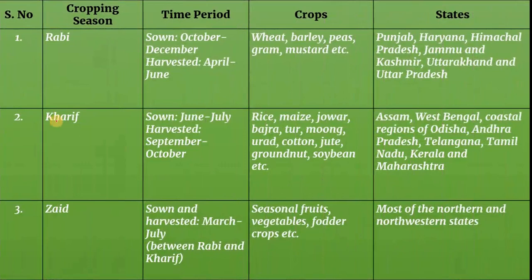The major seasons in India are Rabi, Kharif and Zaid. The Rabi season is sown in October to December and harvested in April to June. Rabi crops include wheat, barley, peas, gram, mustard, etc. These crops are grown in states like Punjab, Haryana, Himachal Pradesh, Jammu and Kashmir, Uttarakhand, and Uttar Pradesh.